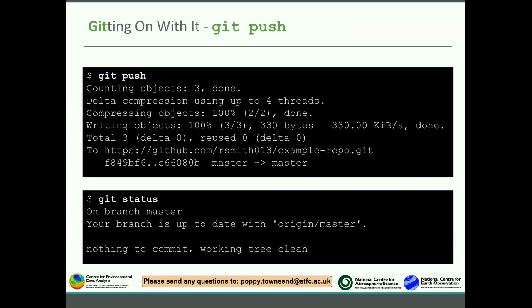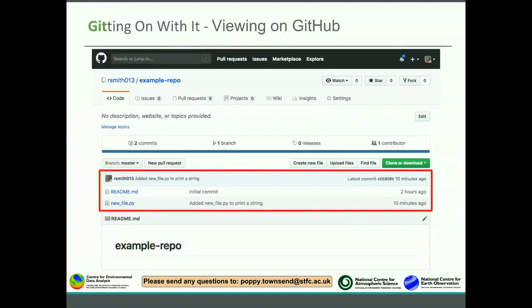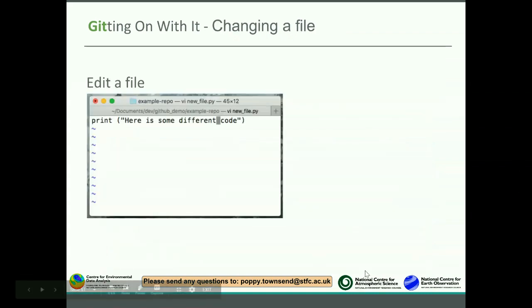The next thing to do is git push, which pushes it to your remote repository — in this case, GitHub. If you just type 'git push', it tells you some information; you don't need to know what all of it means. What's important is that at the end it says it's done. If you type git status, it will say it's up to date with the master branch. Now if you go back to GitHub, you can see that newfile.py has been added, and the commit message is shown there.